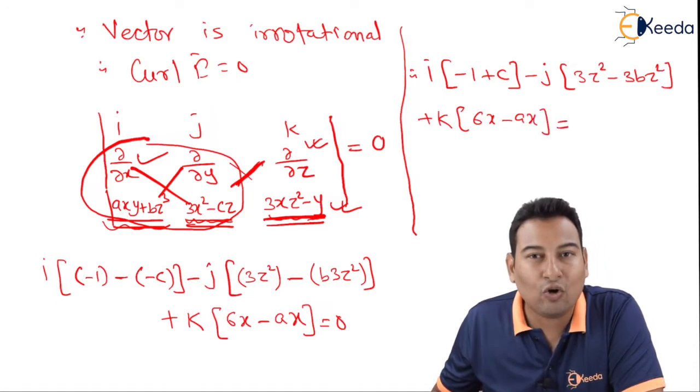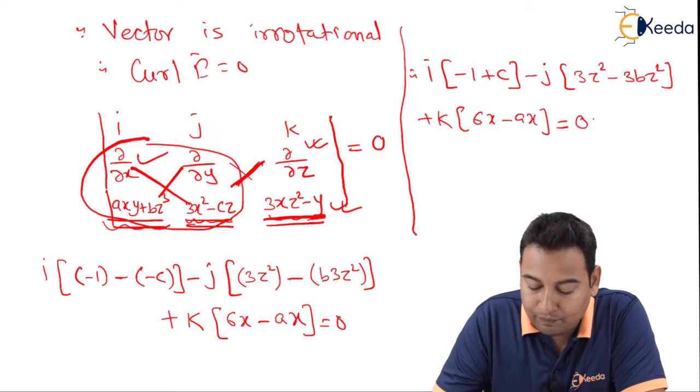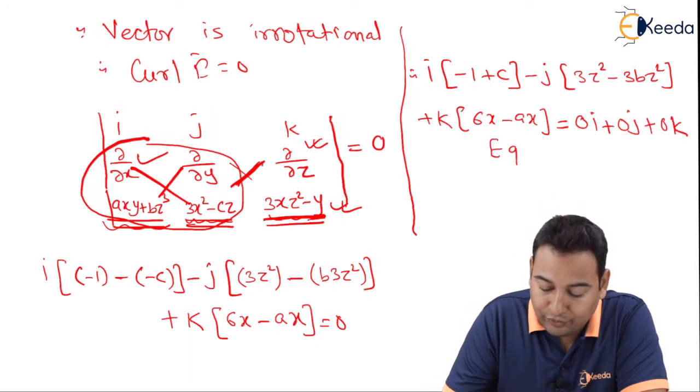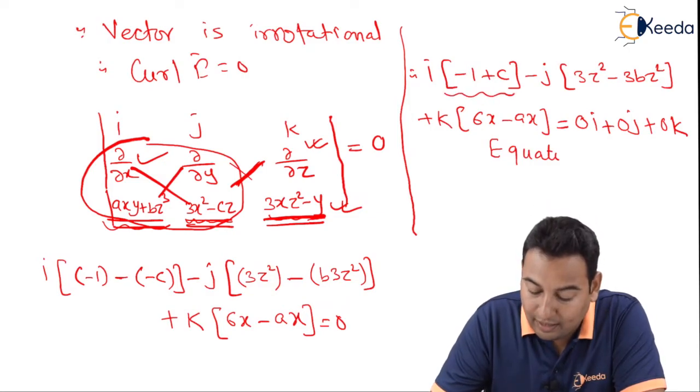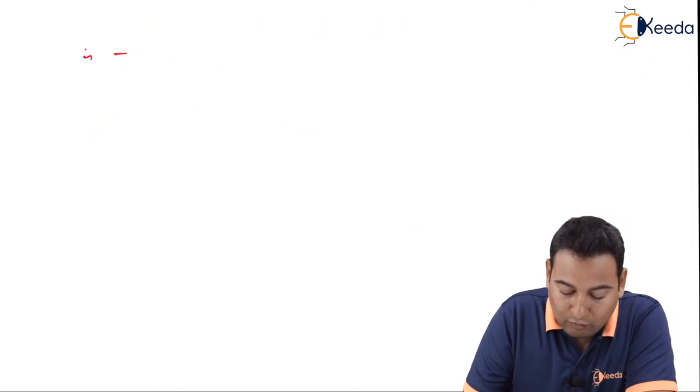Friends, what do you mean by 0 on the right hand side? 0 means actually it is 0i, 0j, and 0k. Let's equate. If you equate, with i here it is minus 1 plus c, and with i it is 0. Therefore, minus 1 plus c equal to 0.